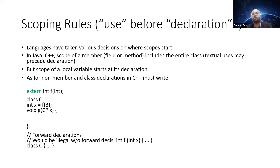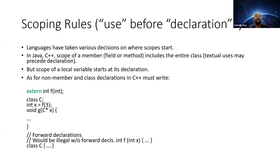One thing to keep in mind in scoping rules is whether to use a variable before you declare it. In some cases it can throw an error, in others it might not, depending on the language. If you are designing your own language, you need to consider how you will enable your developer community to follow these scoping rules.